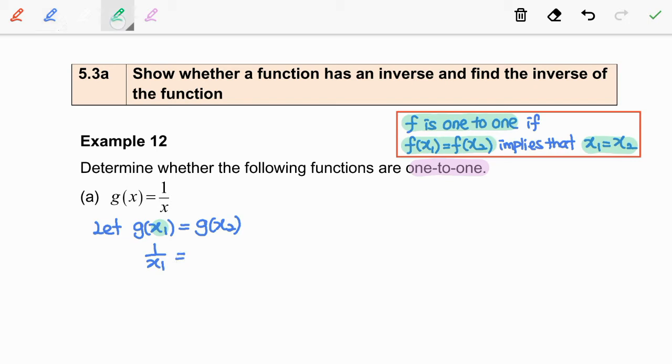And on the right-hand side, we are going to replace x2 into the function g. We have 1 over x2. Now, by cross-multiplying, we get x1 equal to x2.